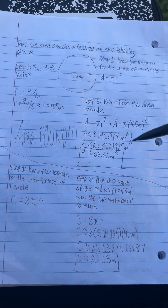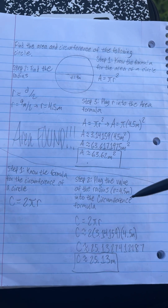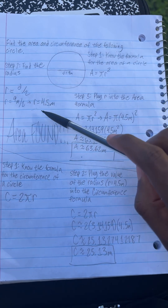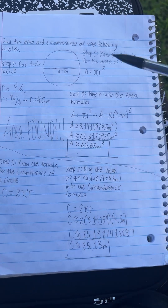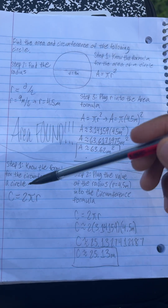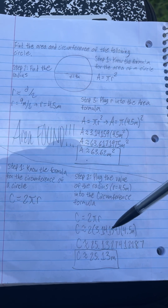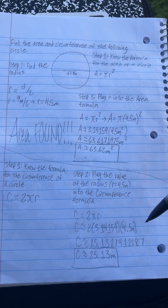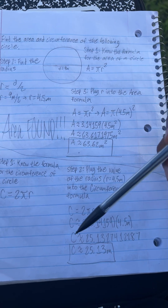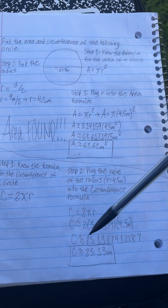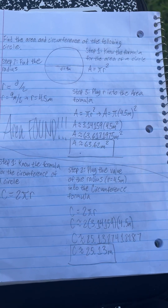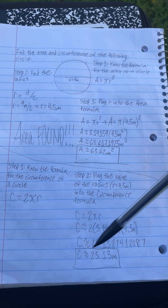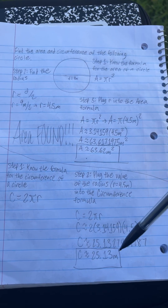For the circumference, we already know the radius is 4.5 meters since we divided the diameter by 2 — 9 divided by 2 is 4.5 meters. So two times 3.14159 times 4.5 meters — that'll give you approximately, if you round to the nearest hundredth, a circumference of 25.13 meters.